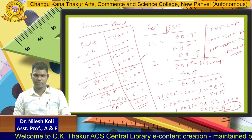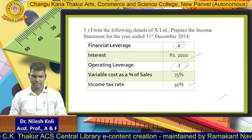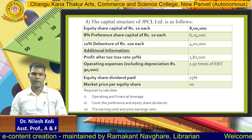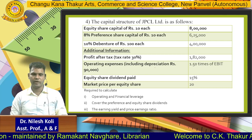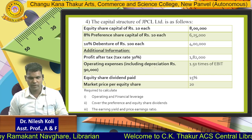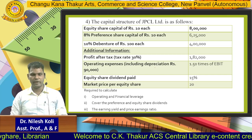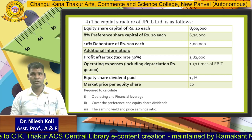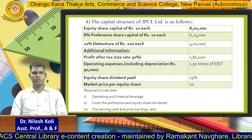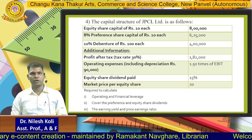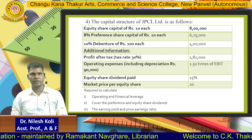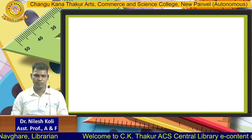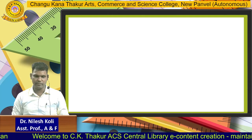The income statement is now prepared. Now we will solve another problem. The capital structure of JPCL Limited is as follows: equity share capital of Rs 10 each = 8 lakh, 8% preference share capital of Rs 10 each = 6,25,000, 10% debentures = 4 lakh. Additional information: profit after tax at 30% = given, operating expenses including depreciation = 90,000, equity share dividend paid = 15%, and market price per equity share = Rs 20. We are required to calculate operating and financial leverage, preference and equity share dividend, earning yield, and price-earning ratio.